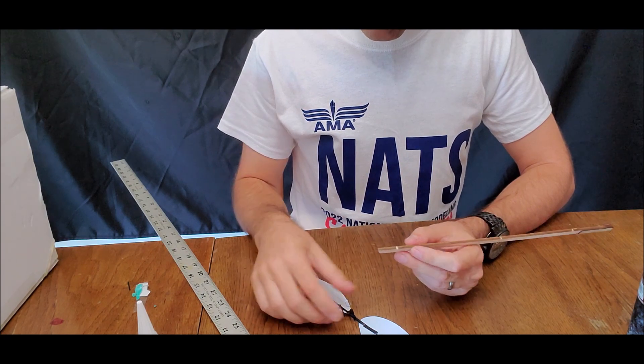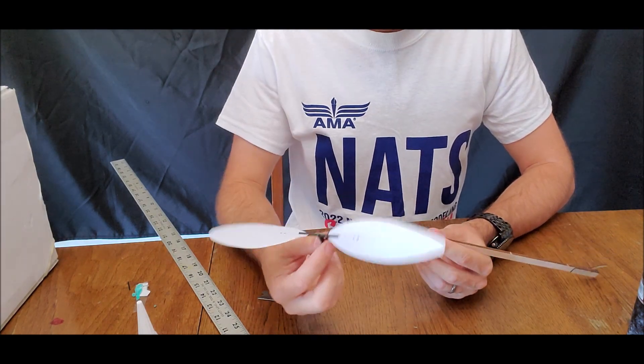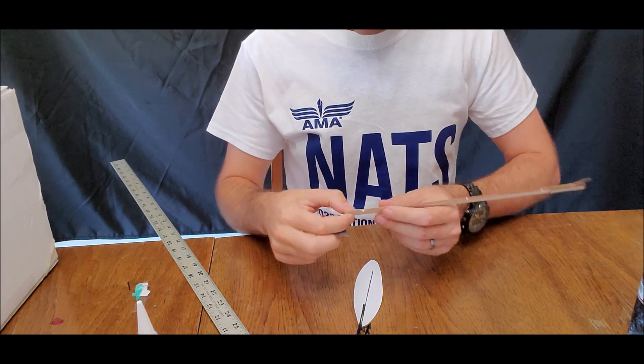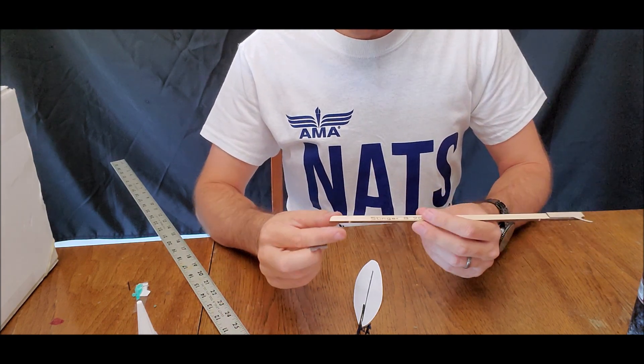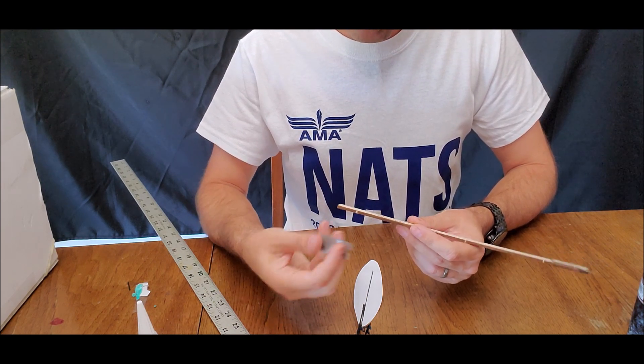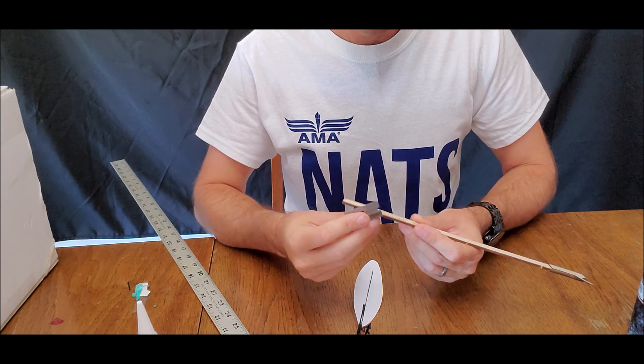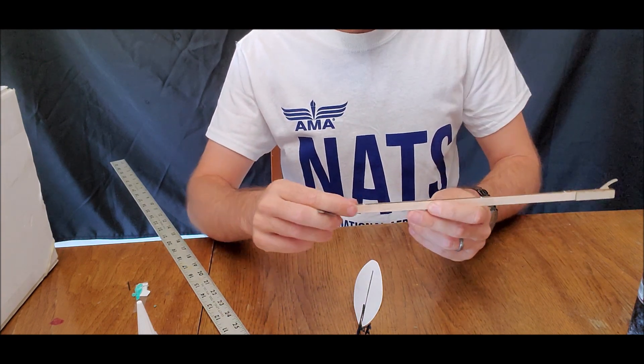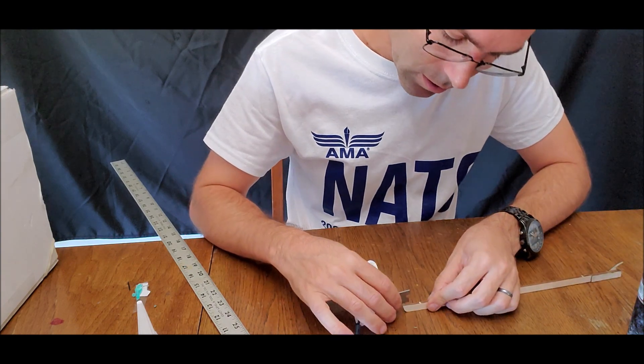The last thing I want to show you is an installation method for these propellers. So there's two ways you can install them. One is if you just have your regular motor stick. If there's any tab down here to provide clearance for an aluminum bearing you would want to take your razor blade and remove that tab. You want the bottom of the motor stick to be flat all the way across.